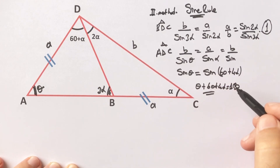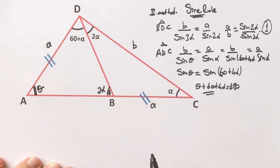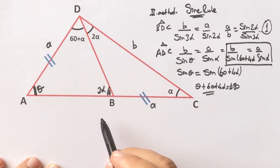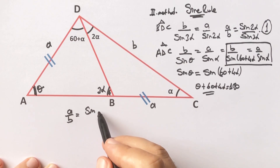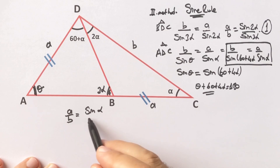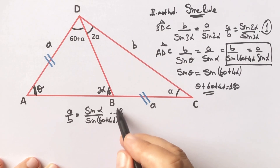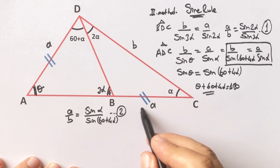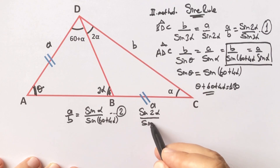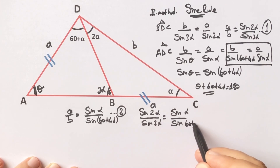Therefore, rearranging this equation gives a over b equals sine alpha over sine of 60 plus 4 alpha. This is the second equation. If we equalize these two equations — since both equal a over b — we get: sine 2 alpha over sine 3 alpha equals sine alpha over sine of 60 plus 4 alpha. We can expand sine 2 alpha as 2 times sine alpha times cosine alpha.